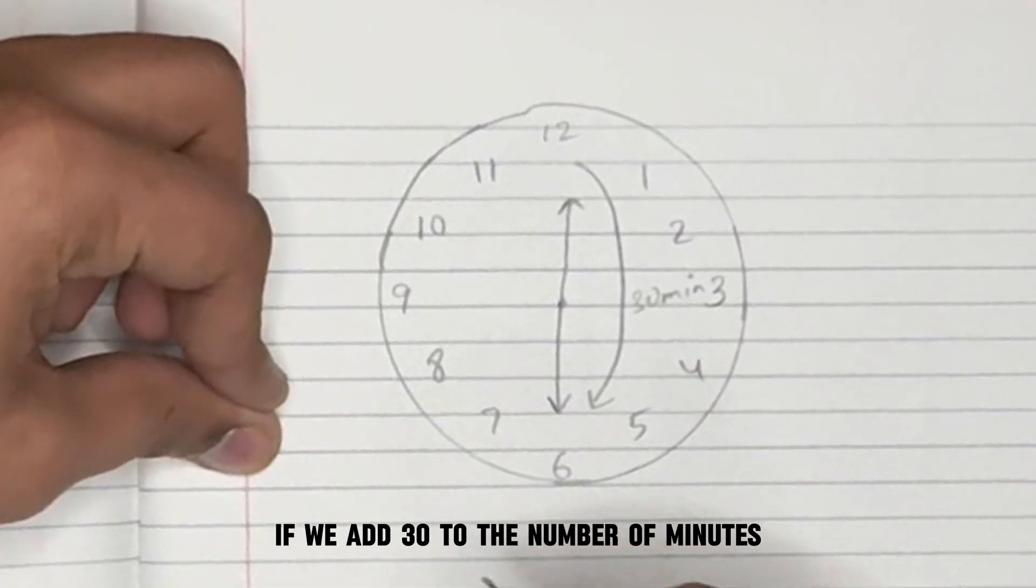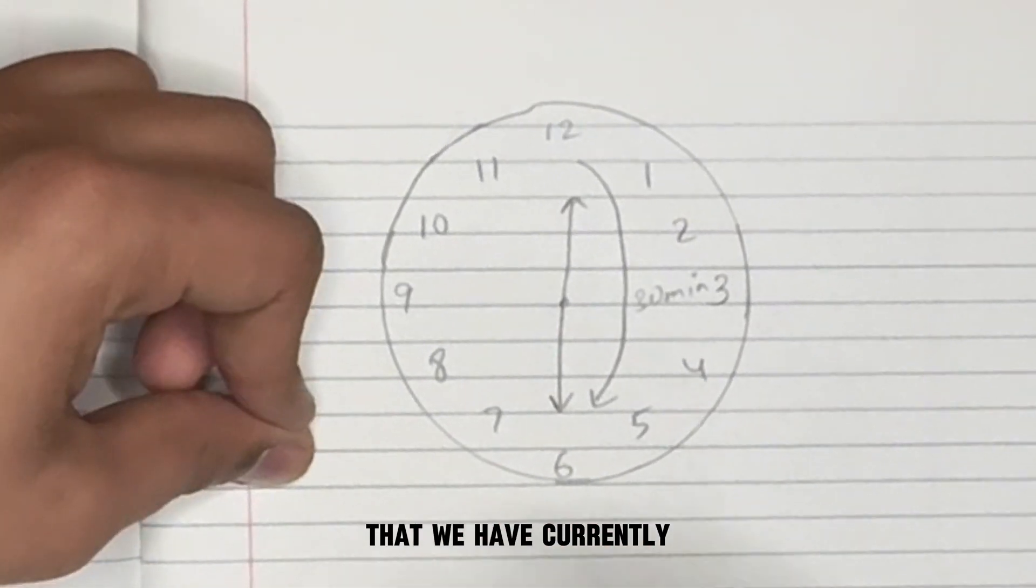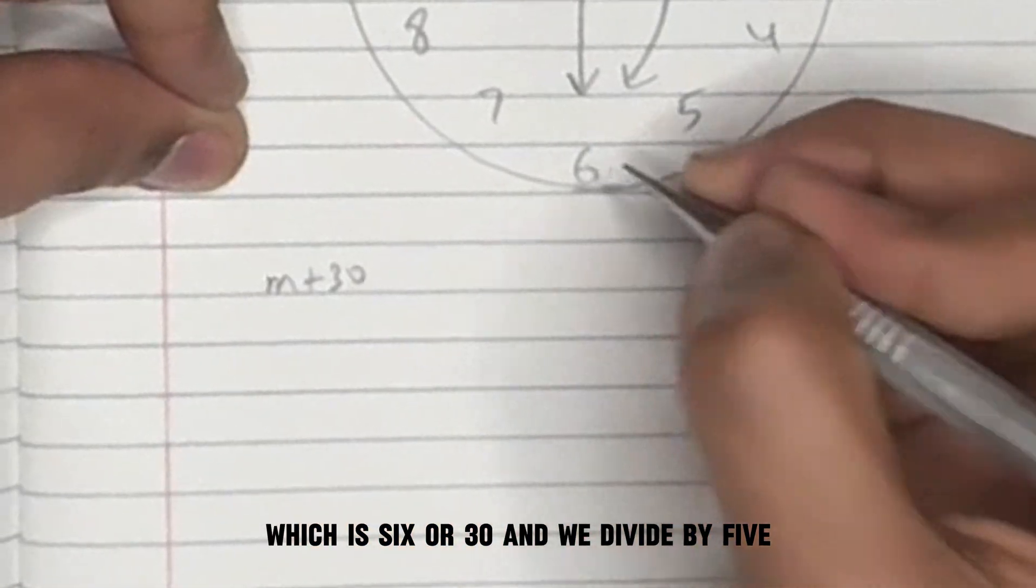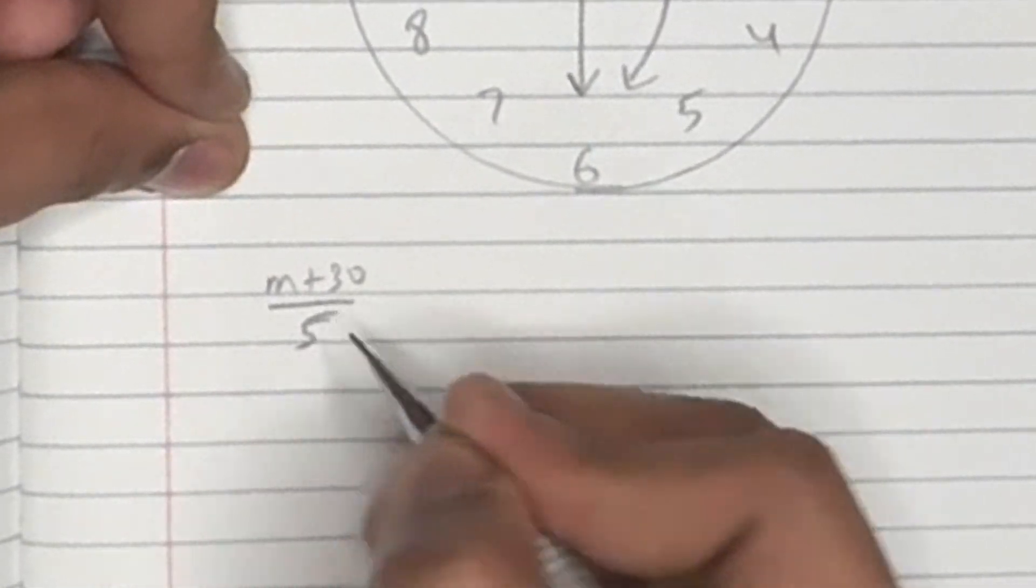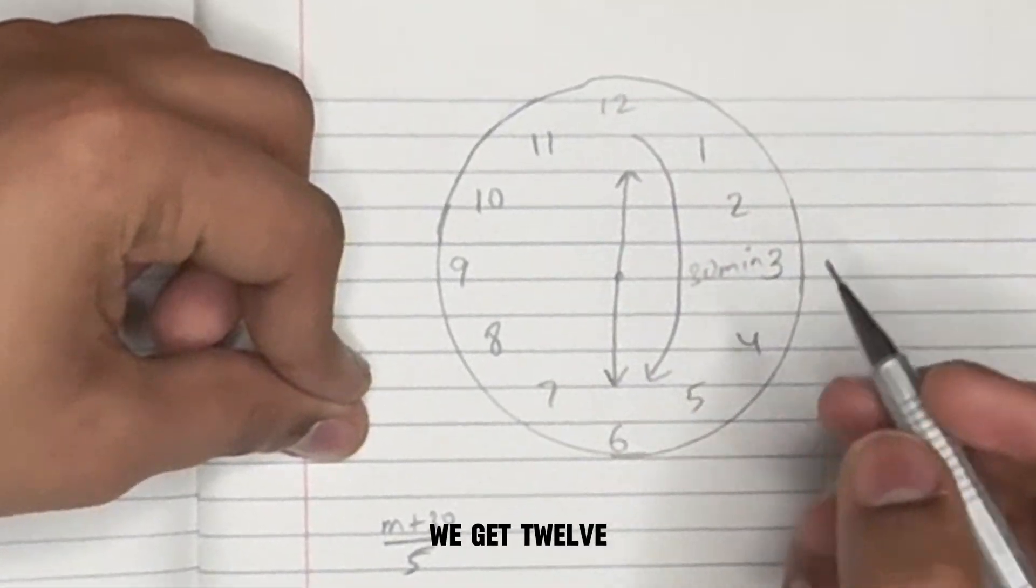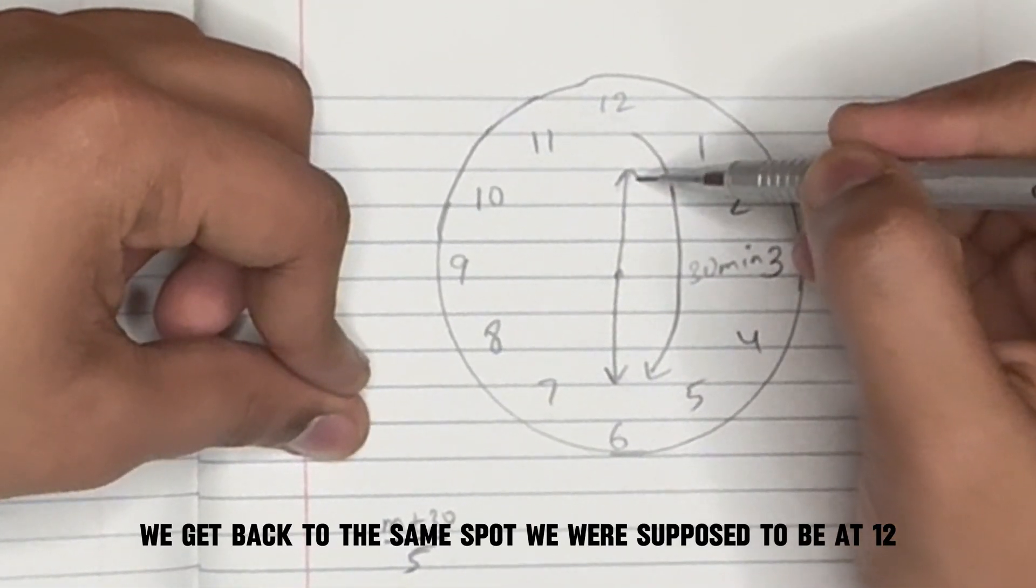If we add 30 to the number of minutes that we have currently, which is 6 or 30, and we divide by 5, we get 12. We get back to the same spot we were supposed to be at.